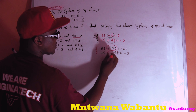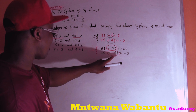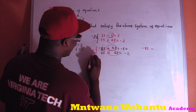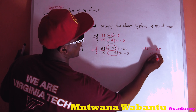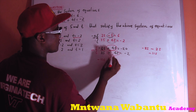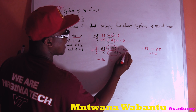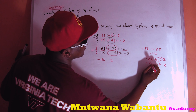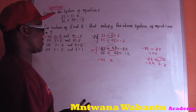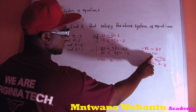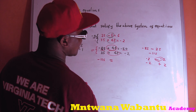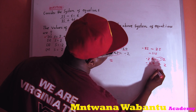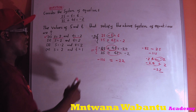Now the intention is to eliminate t. We have positive 4t in both, so we subtract: 4t minus 4t equals zero. For the s terms: negative 8s minus 3s gives negative 11s. On the right side: negative 24 minus negative 2, which is negative 24 plus 2, equals negative 22.